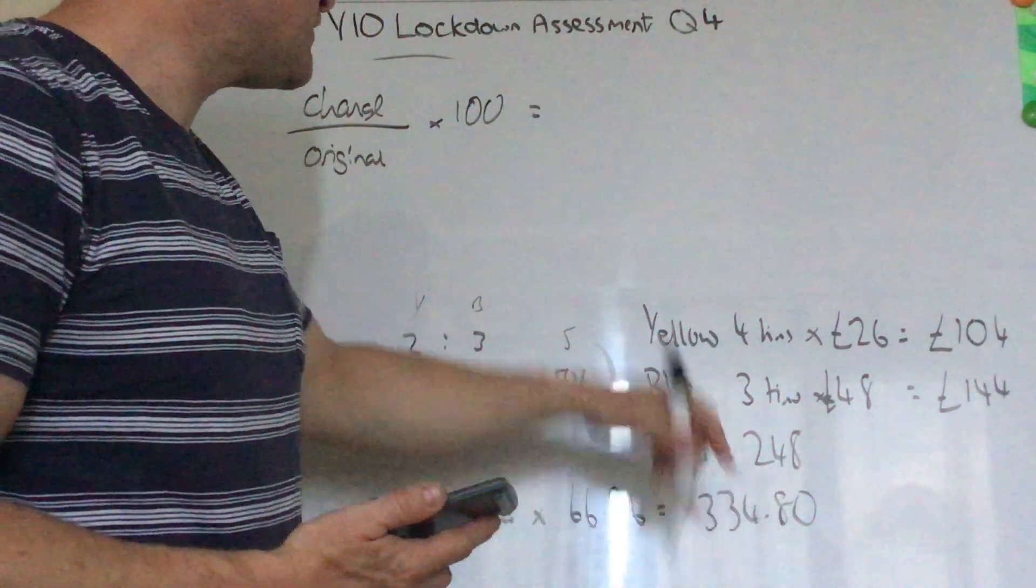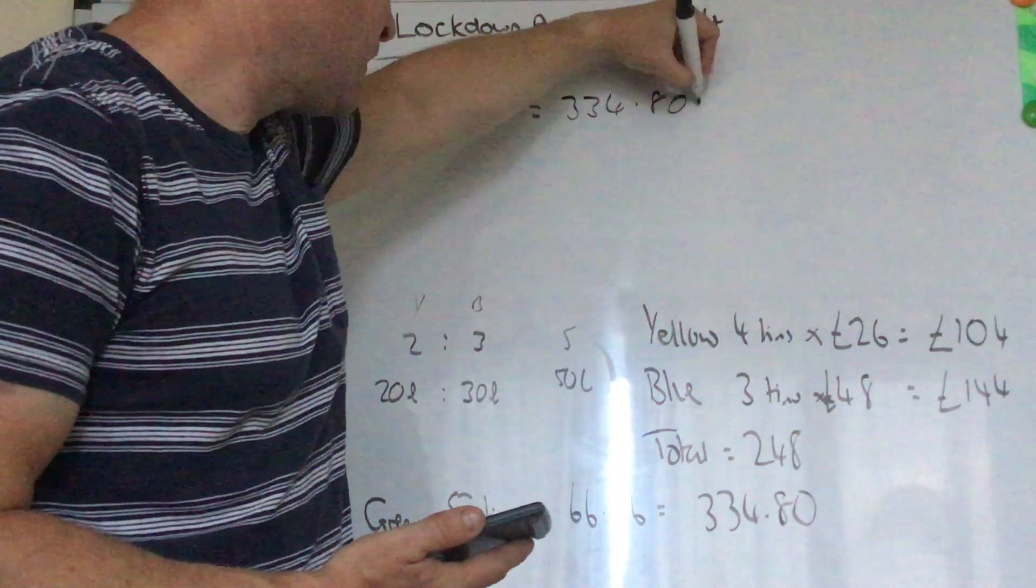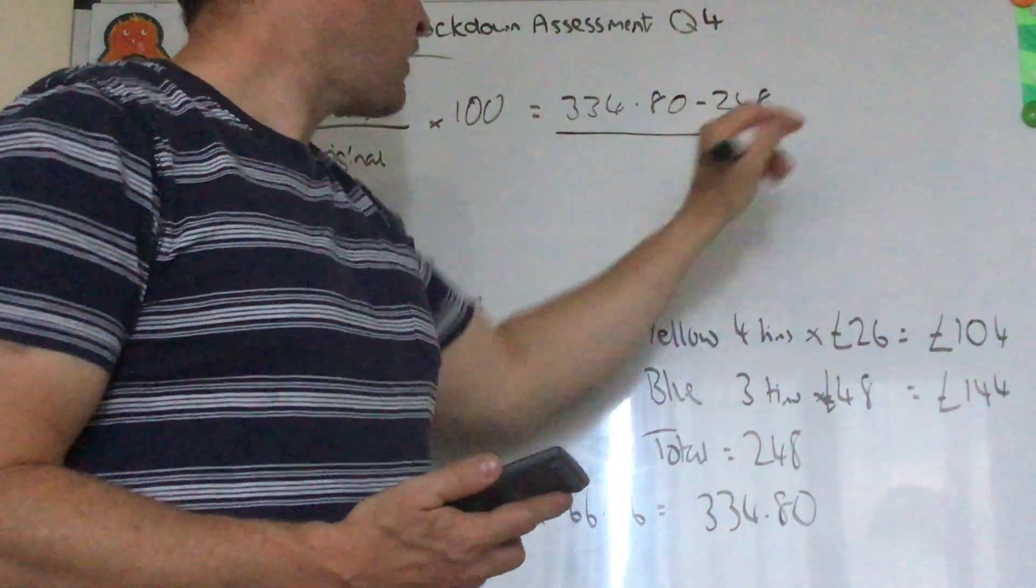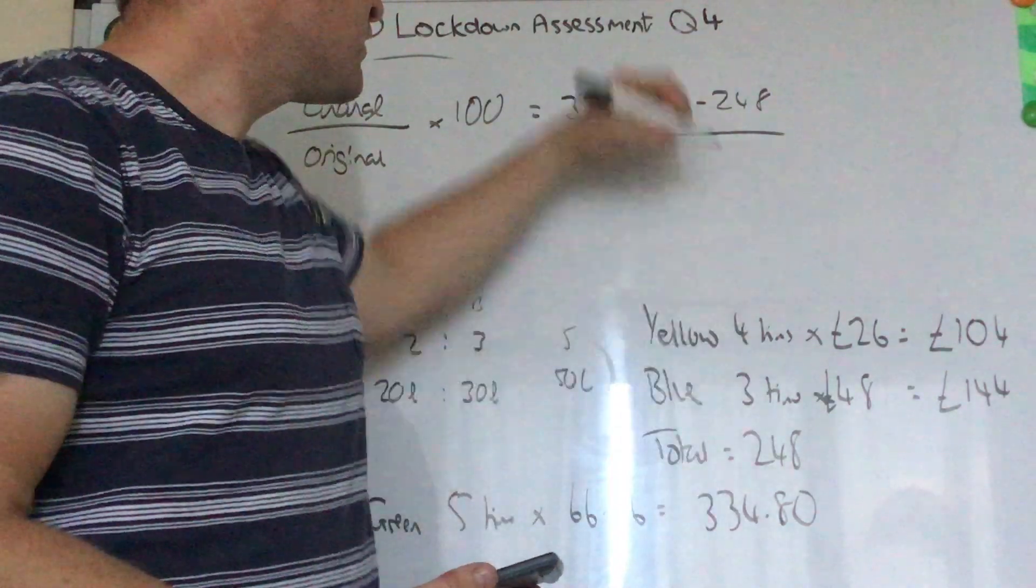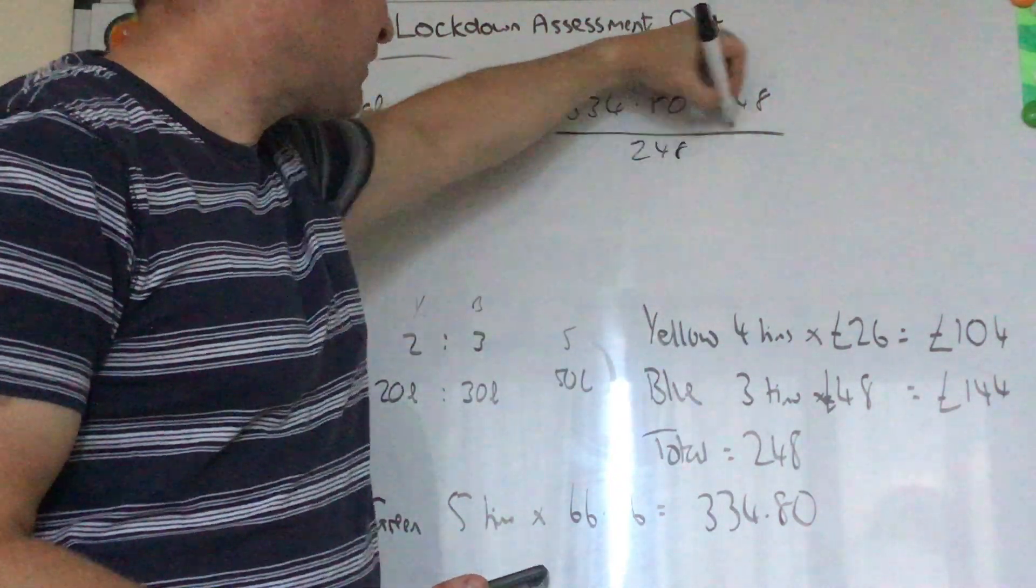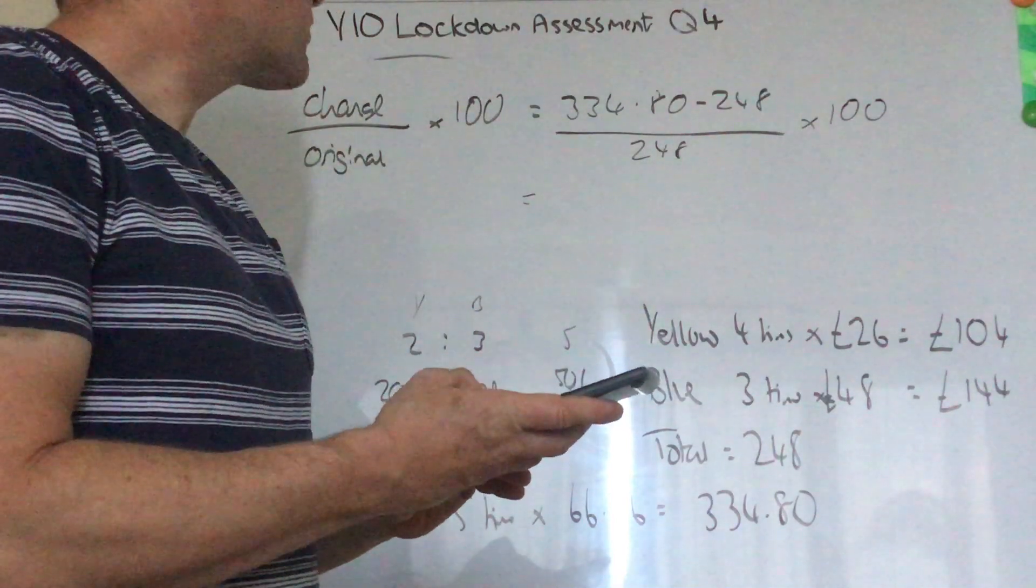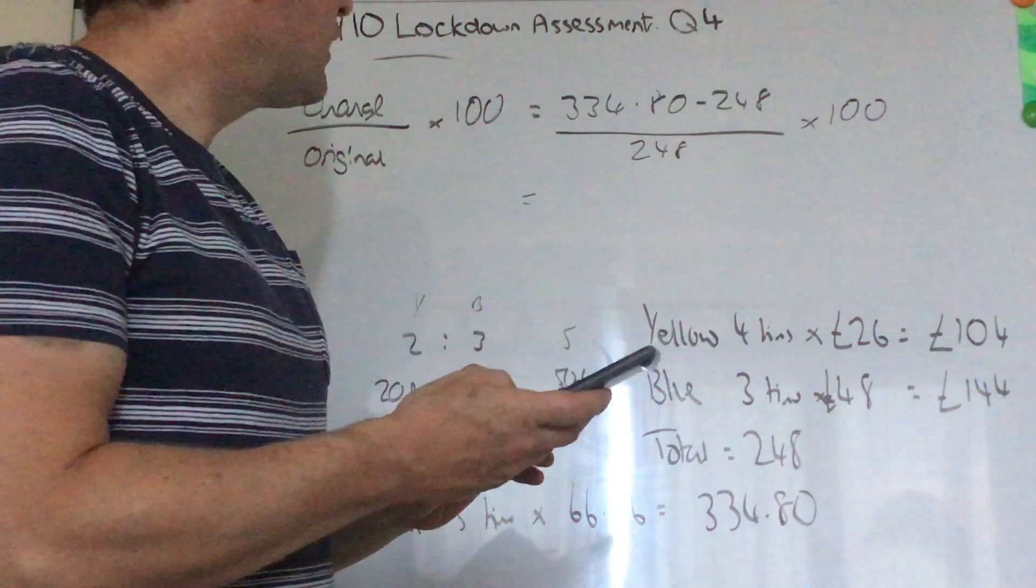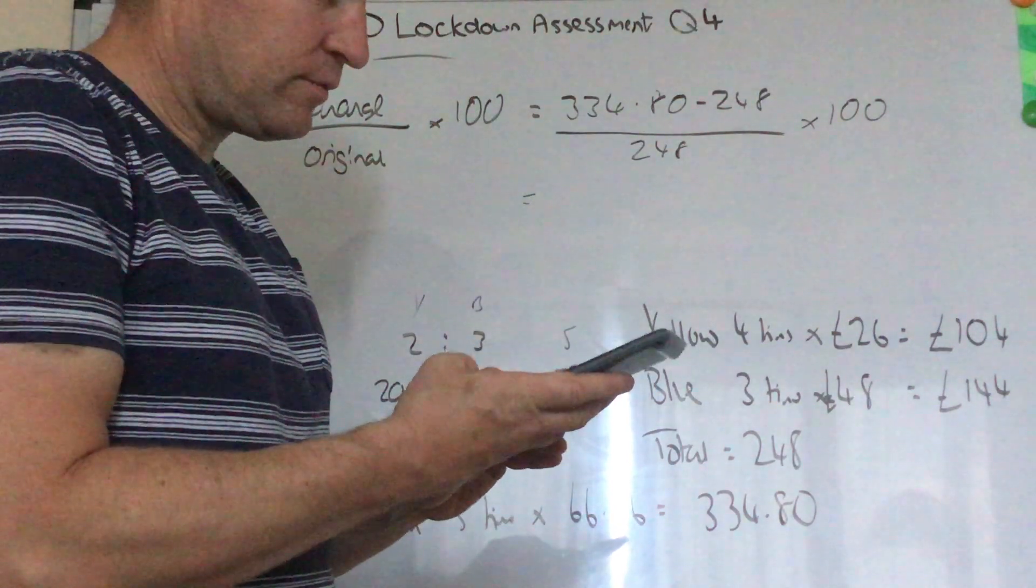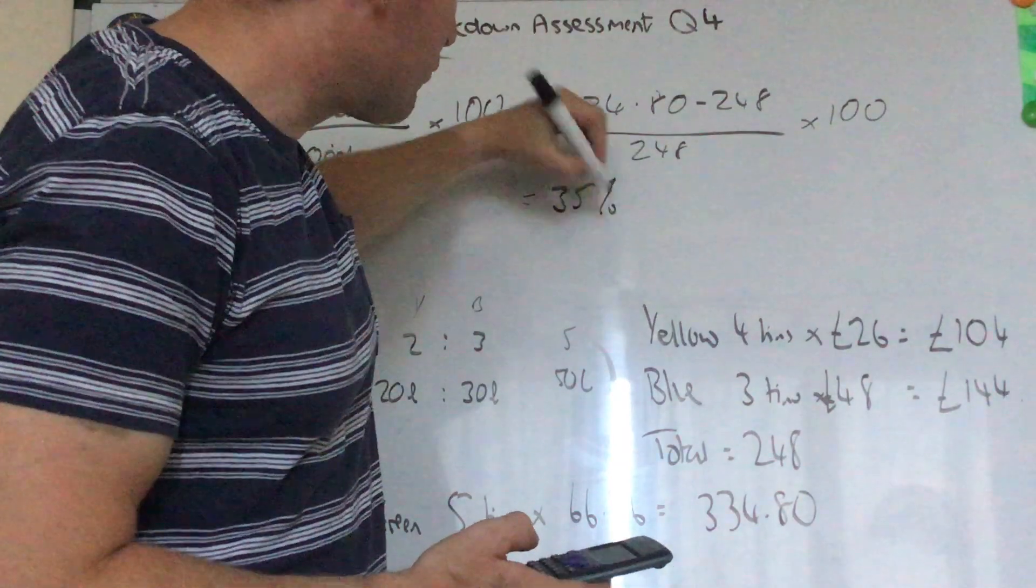So we do £334.80 minus £248 over the original, which is how much he originally spent, £248, and we times the answer by 100. So minus 248 equals... and we get the answer of a 35% profit.